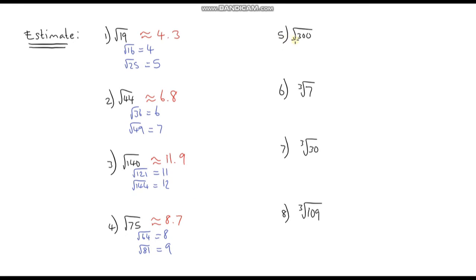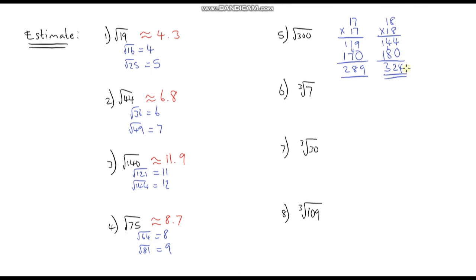Number 5: the square root of 300. I know my square numbers up to a certain point — I know 16 squared is 256. So let's work out 17 squared using some traditional long multiplication: 17 squared is 289, so the answer is greater than 17. Then 18 squared is 324, so it's between 17 and 18 and approximately halfway, but slightly closer to 17. I'll go with approximately 17.4.